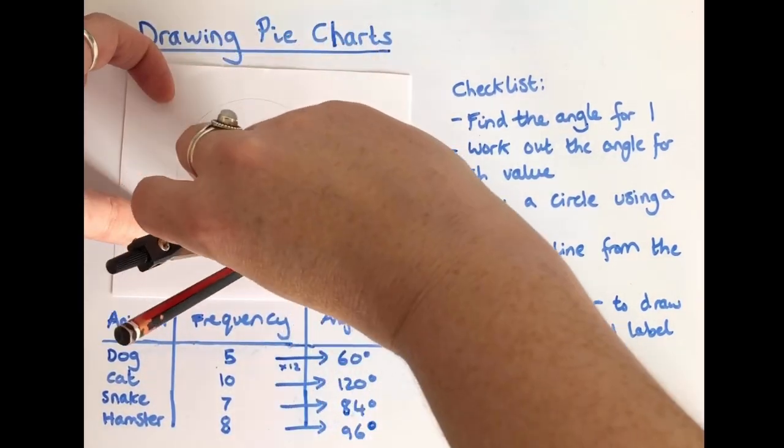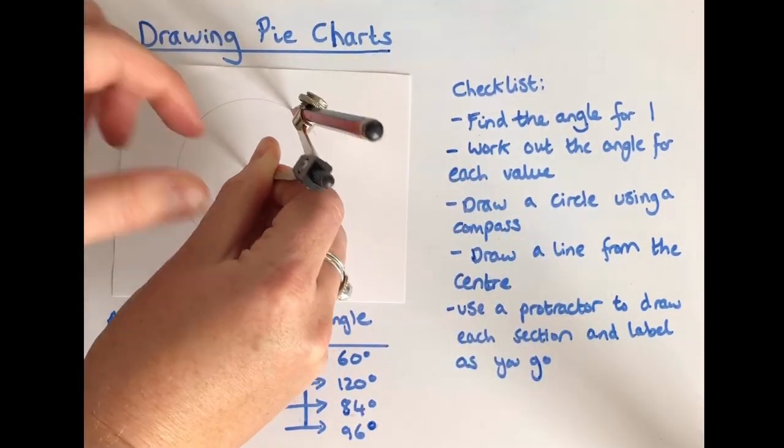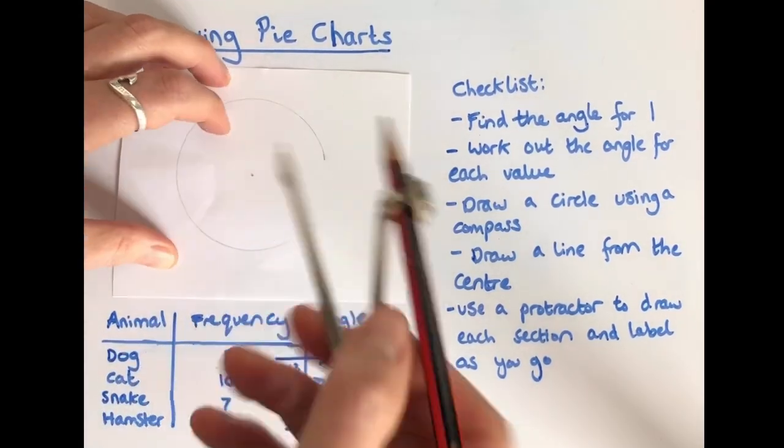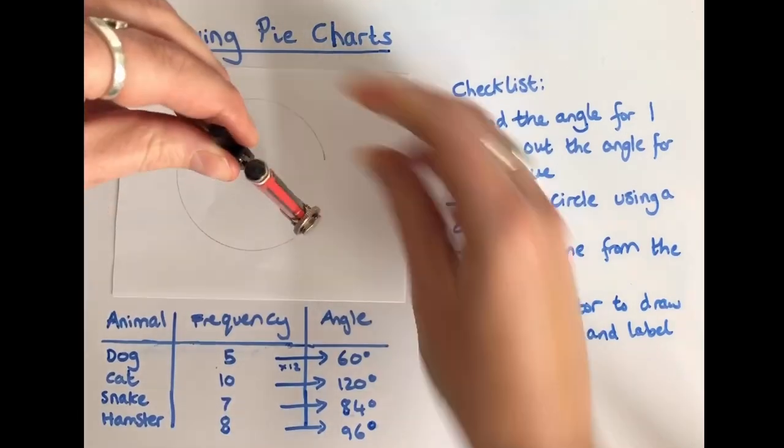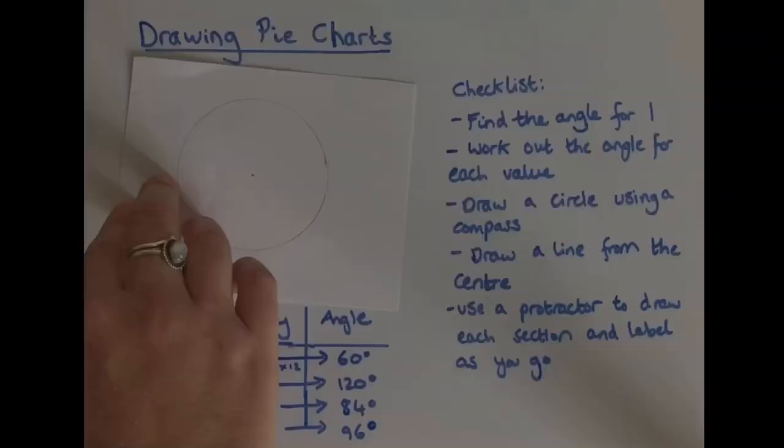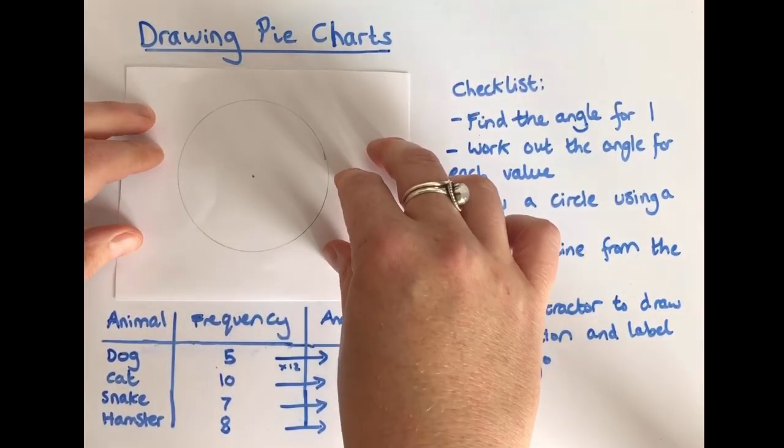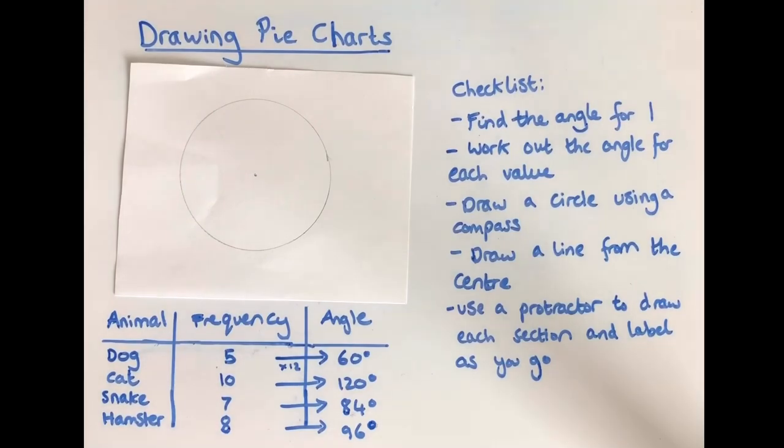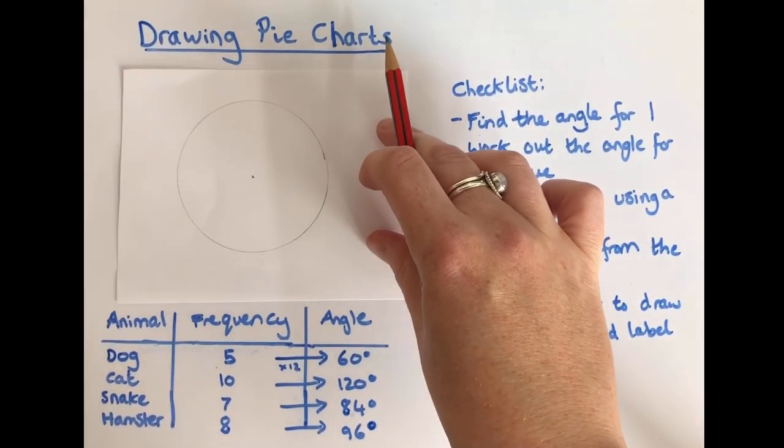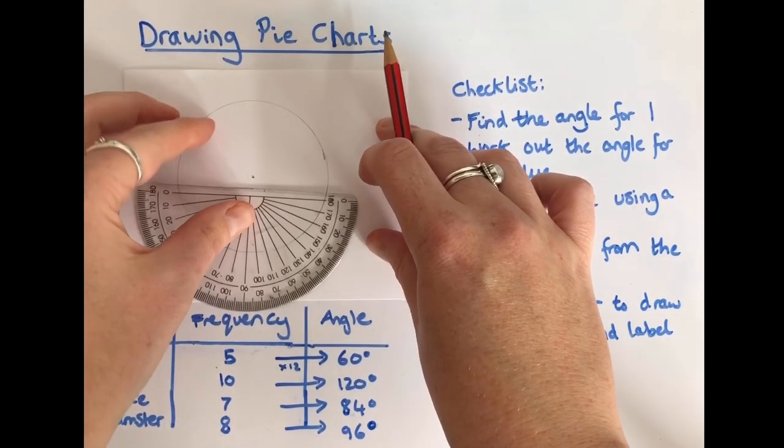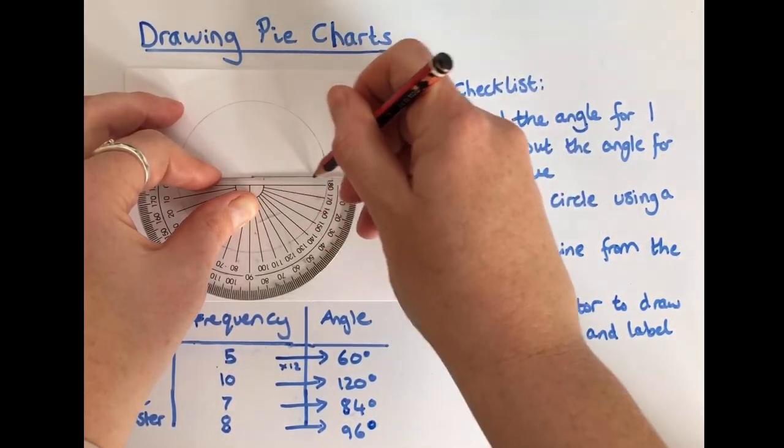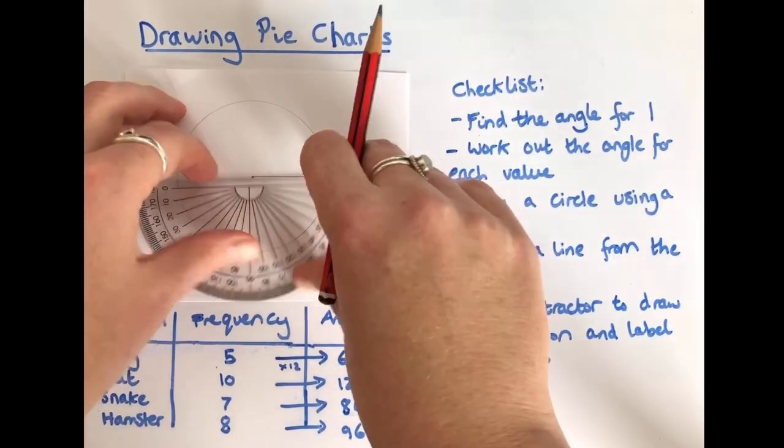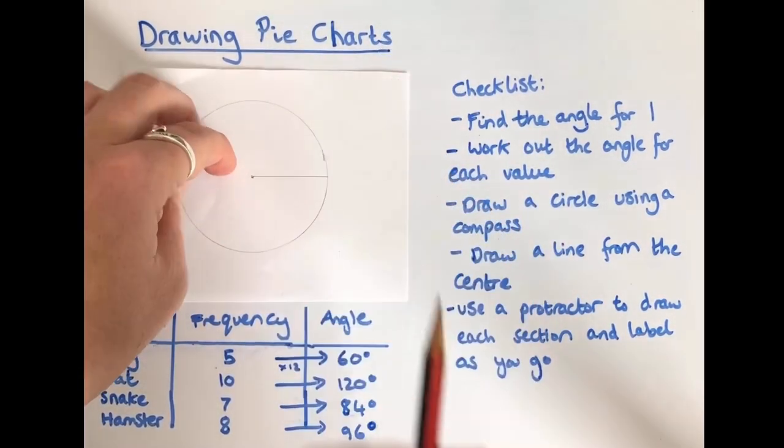So I've drawn my circle and I can then get my pencil and it says draw a line from the centre to the outer edge. So I tend to just draw that, I just use my protractor because it's already got a straight line. And that's going to be the start of my first, I call them wedges or sections.